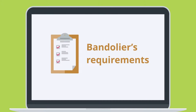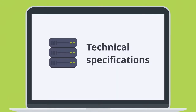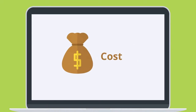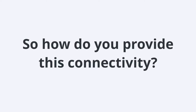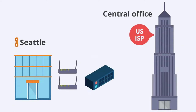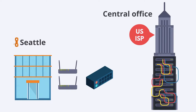First, you need to look at Bandelier's requirements, your equipment's technical specifications, and their locations' distance from the closest central offices, to ascertain whether you can provide the service they desire and how much they plan on charging for it. At the central office, you'll need to take the connections from Bandelier's routers and combine them using specific switches with a high number of ports. The central office will then aggregate them into larger groups of interconnected switches and other networking devices to enable interconnectivity between other central office sites, such as the one in Seattle.